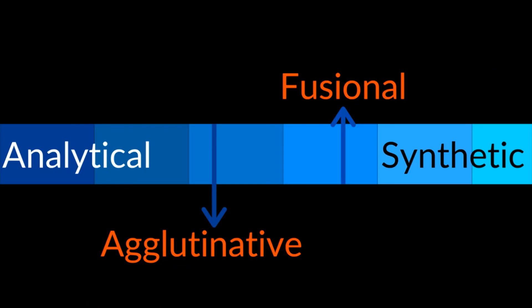This can be mapped out onto a spectrum, from analytical languages — ones with their morphemes separated out — to the more synthetic, fusional and agglutinative languages, with their morphemes bundled together.